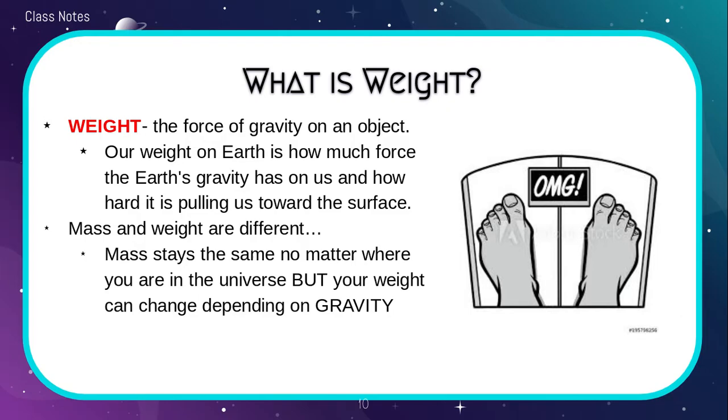Weight is the force of gravity on an object. Our weight on earth is how much force the Earth's gravity has on us, so it's pulling us towards the surface. But mass and weight are different. We use them interchangeably when we're on Earth and that's fine because we're always on Earth.